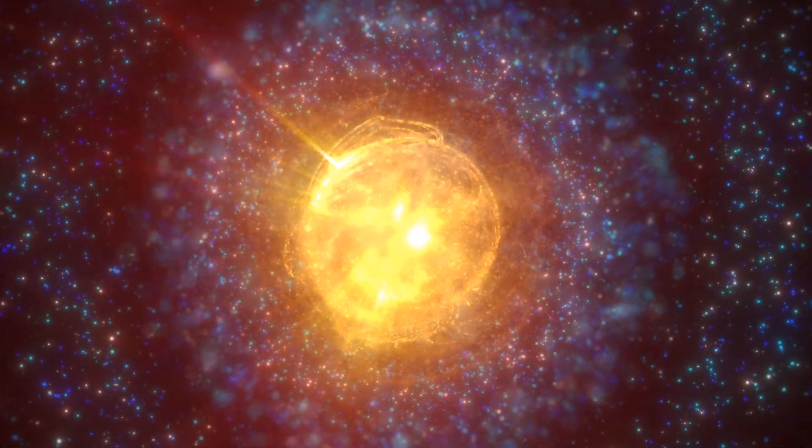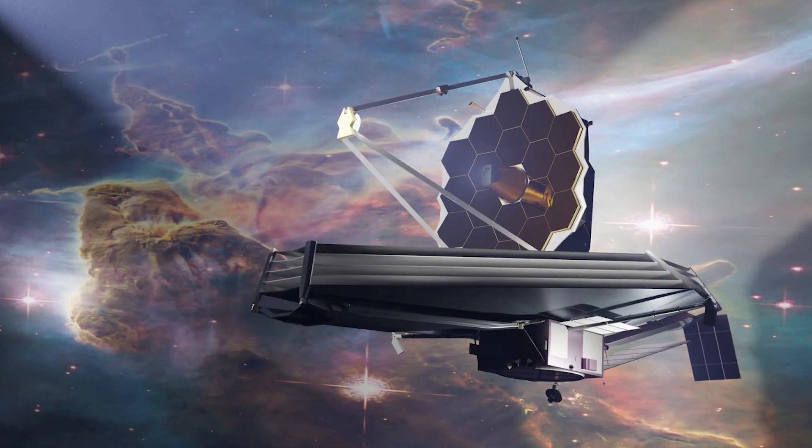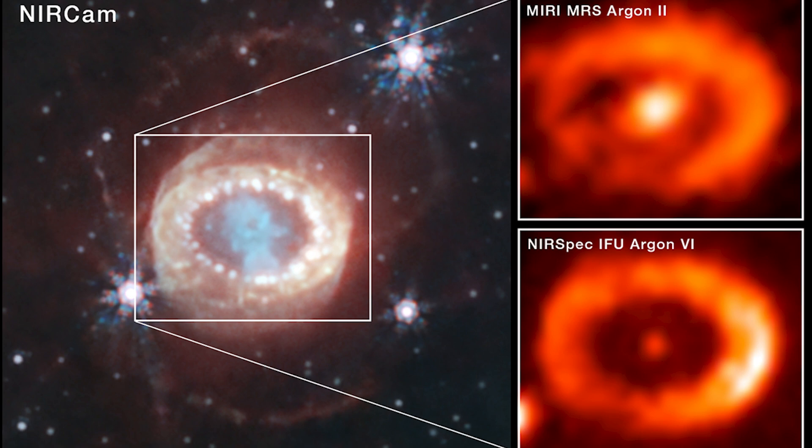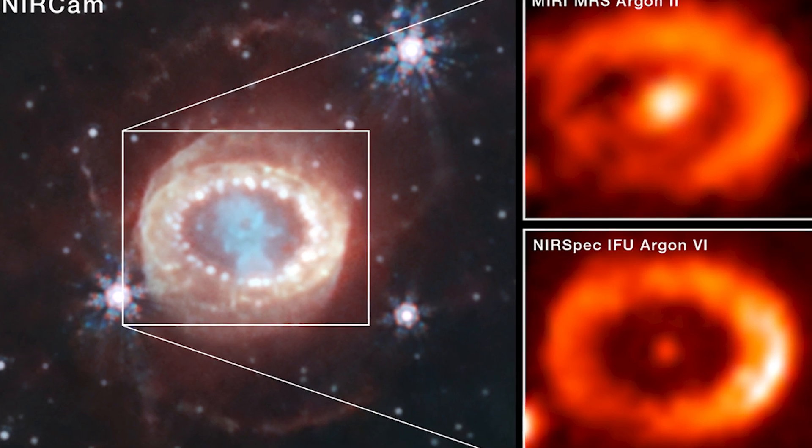The supernova remnants were one of the first objects the Webb Telescope explored when it came online in July 2022. The three-panel image that supported this finding was captured on July 16th.